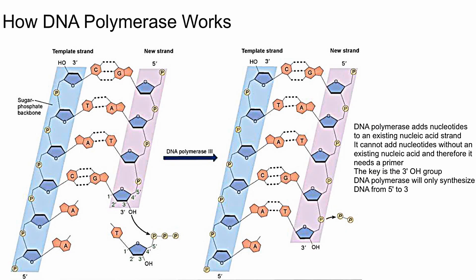It's also really important to remember that because it needs a 3 prime OH, DNA polymerase will only synthesize DNA from 5 prime to 3 prime—it can never go the opposite way. Something cool about DNA polymerase is that it'll add bases at a rate of 1,000 bases per second.